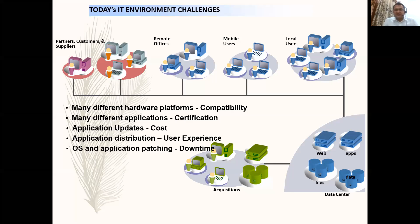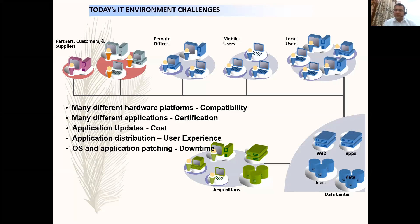You have many partners, customers and suppliers, remote offices, mobile users, and local users. You have a complex set of information systems with web applications, data centers, files, and so on. The challenges include many different hardware platforms — your business partners might use different source systems on different hardware, resulting in compatibility issues. Many different applications — if you are running SAP and want to do business with a customer running Oracle ERP, both systems should be compatible and certified to communicate with each other.